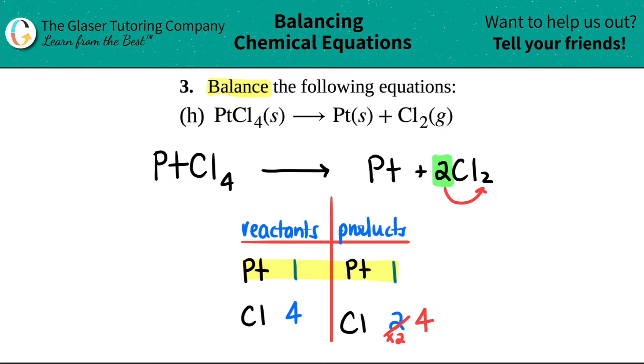I'm looking at this and thinking there's gotta be a catch, but no, there is none. This is the answer. All we had to do is put a two here. One and one, four and four. When all the numbers are the same on both sides for each individual element, you're done. That's as simple as it gets.